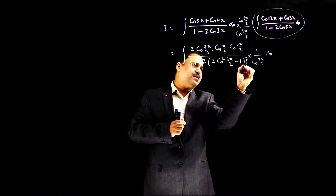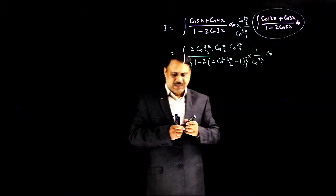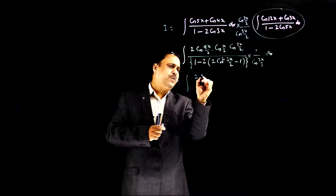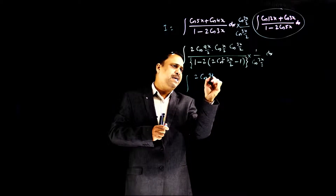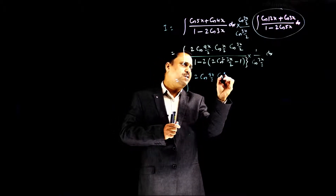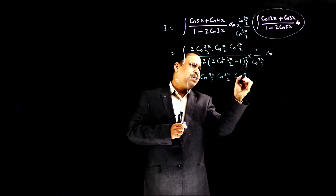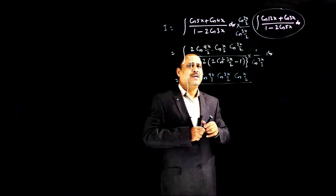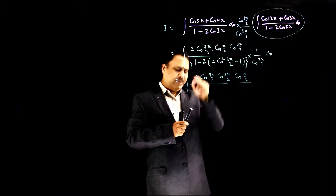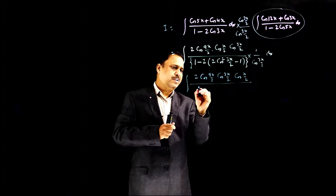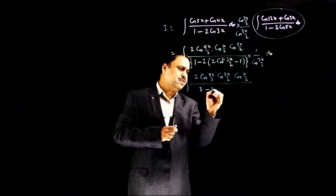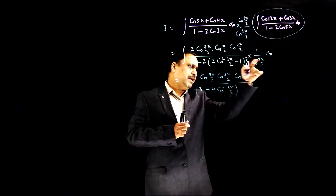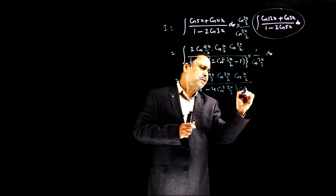Now, see what is inside the curly brackets. Writing the numerator once more: cos(9x/2) · cos(3x/2) · cos(x/2), divided by: the denominator becomes 1 minus (−1) plus 2, giving 3 minus 4cos²(3x/2), and that is multiplied by cos(3x/2).